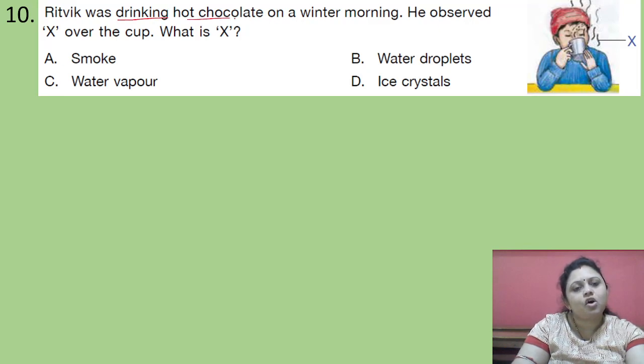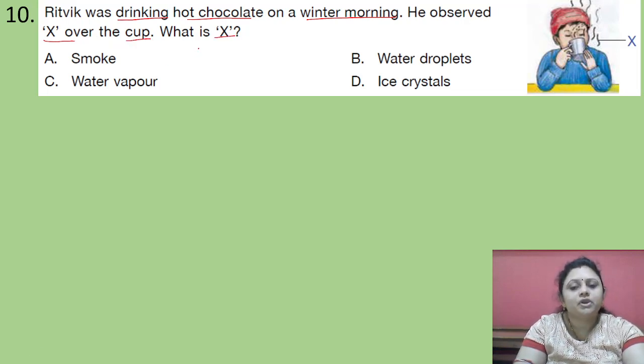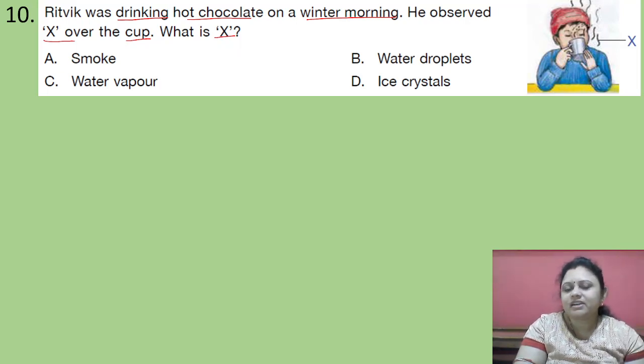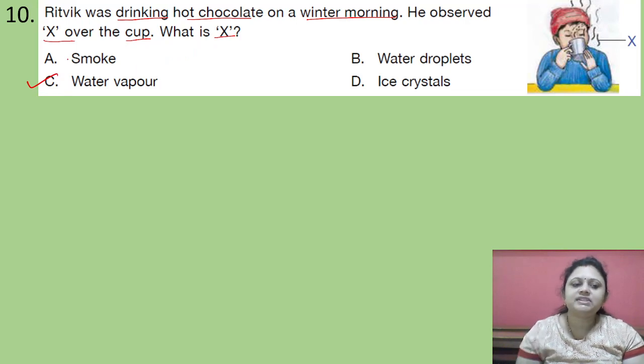Coming to the next question. Hrithik was drinking hot chocolate on a winter morning. He observed something over the cup. What is it? So options are A. Smoke. B. Water droplets. C. Water vapor. D. Ice crystals. So you must have seen while you are drinking hot milk or hot chocolate, or you may have noticed that when the elders at home they are having coffee or tea, so something is coming out of it. So what is that something? That is the water vapor. So correct answer is option C.